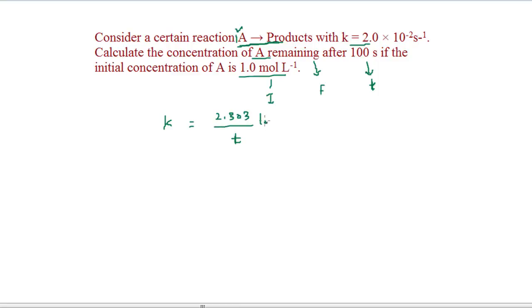Now we can plug in the values. You can see that k value is given, final amount is to be calculated, initial amount is given here, and t value is given, that is time.